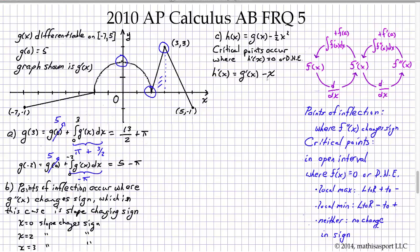First of all this function exists everywhere, this function h prime of x. It exists over the interval. It exists everywhere. So, we don't have to worry about the does not exist part. So, now we have to say where is g prime of x minus x equal to 0.